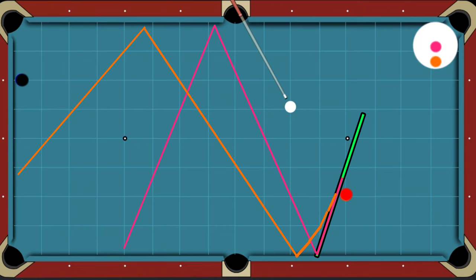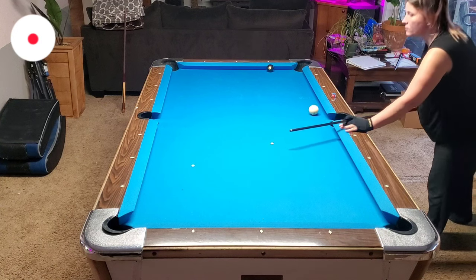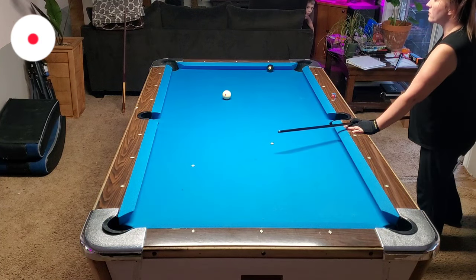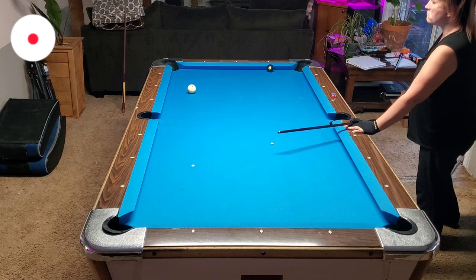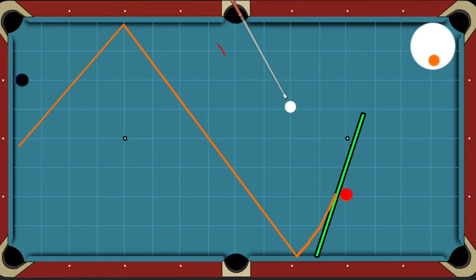This is what the shot looks like when played with stun. If I had an obstacle ball or two blocking my path in this area, I could use a firm draw stroke to avoid the obstacle balls and get position on the eight ball.